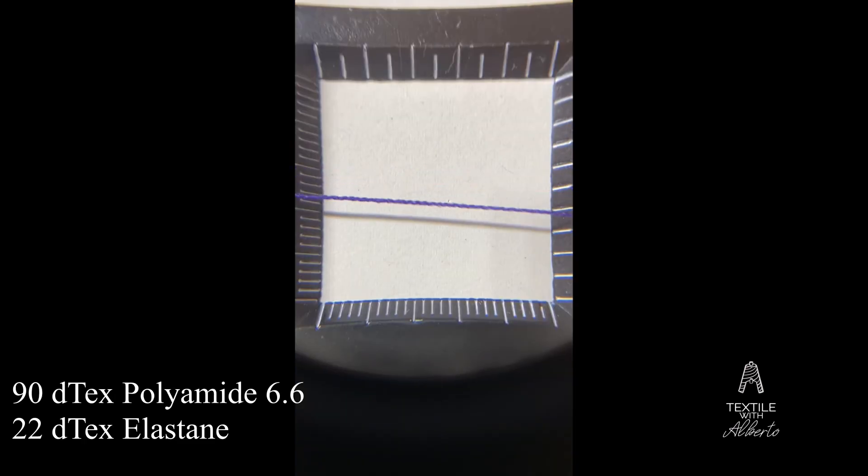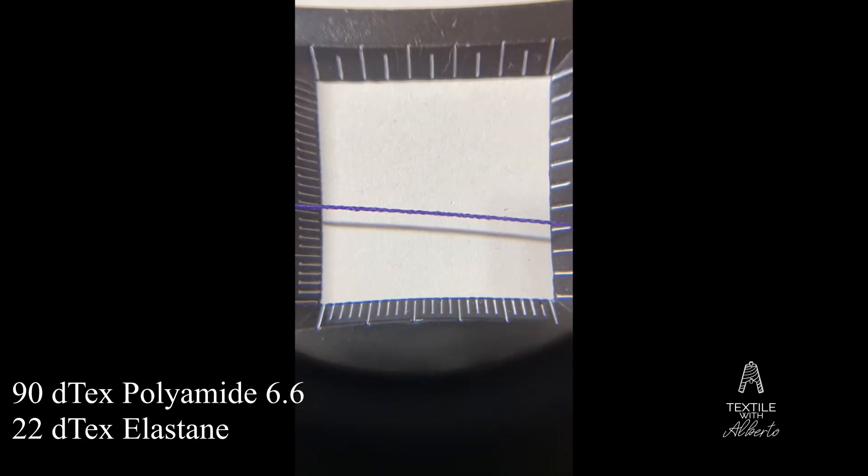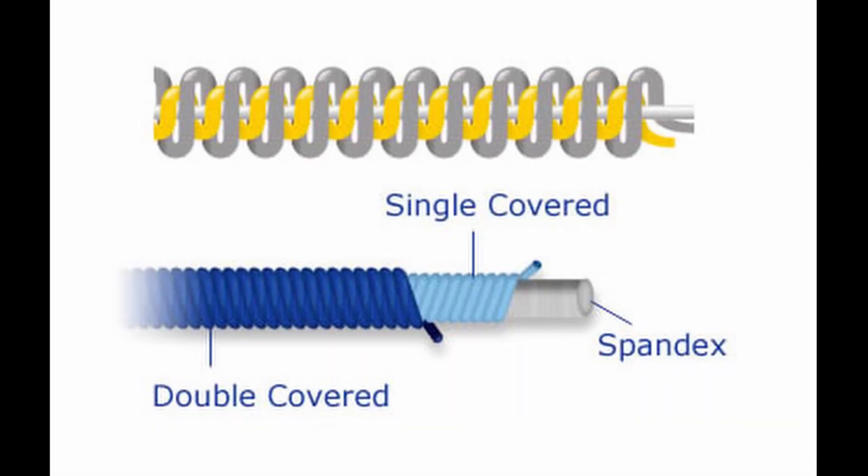Last but not least, I have a polyamide with elastan yarn. As you can see here, this is very difficult to tear apart. It's very elastic. It's cool because you can clearly see in this yarn the coiled polyamide on the elastan. If you don't know anything about elastan covering, I will leave my video that I made a couple of weeks ago below.